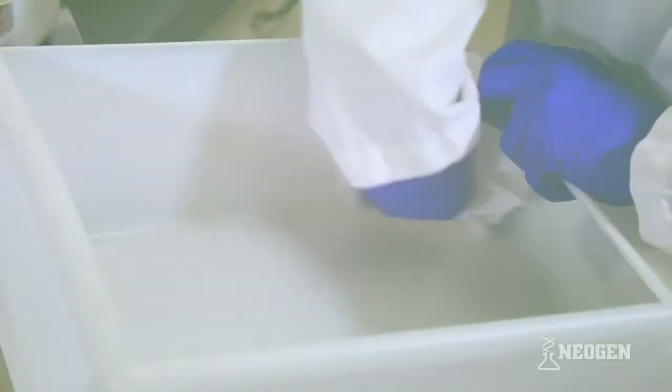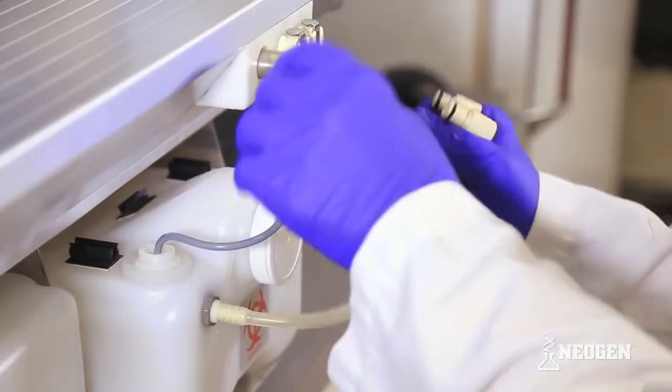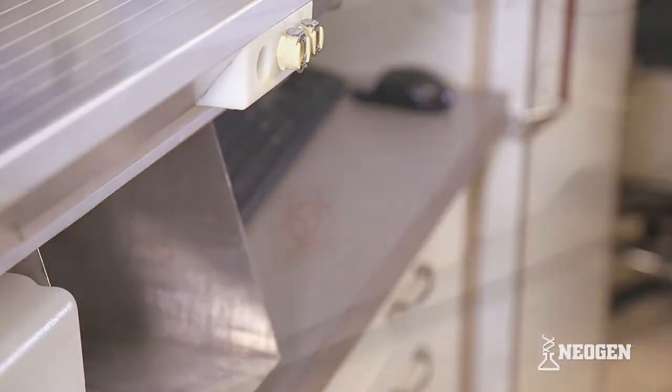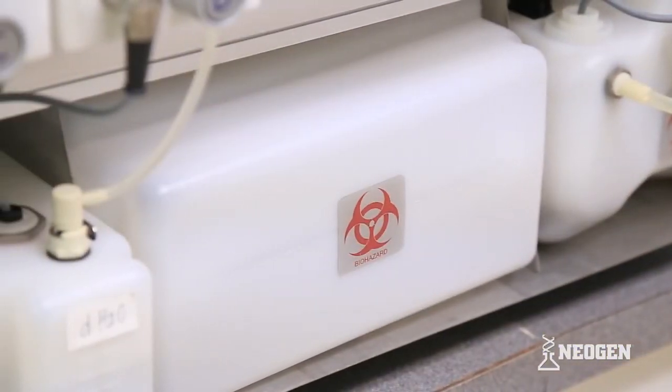For monthly maintenance, disinfect tip waste and liquid waste container with 70% alcohol solution, 10% bleach solution, or other biohazard decontamination solution. If a 10% bleach solution is used, rinse the container five times with DI water.